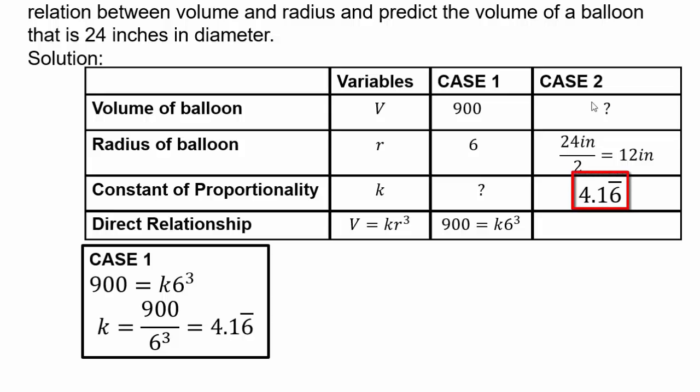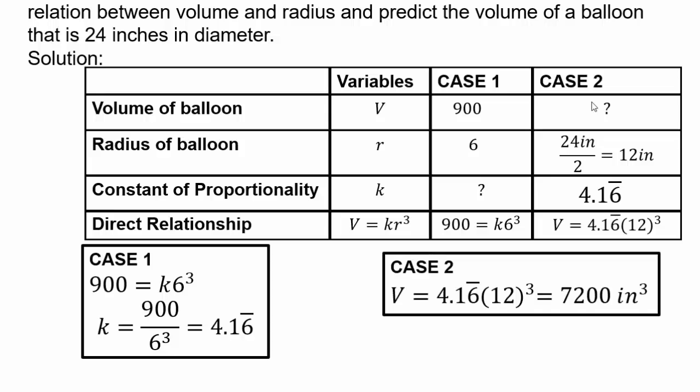So let's put that value for our k. So now that we have our k, our case 2 relationship is going to be what? We have our volume is k times r cubed. So k times r cubed so that when I use my calculator, I will end up with 7200 cubic inches. So that is the final answer. The red is my final answer. So the volume of the balloon when the diameter of the balloon is 24 inches is 7200 cubic inches.